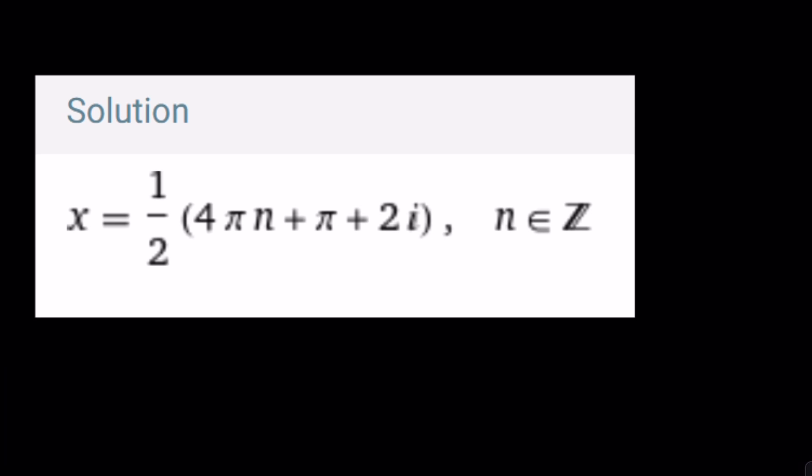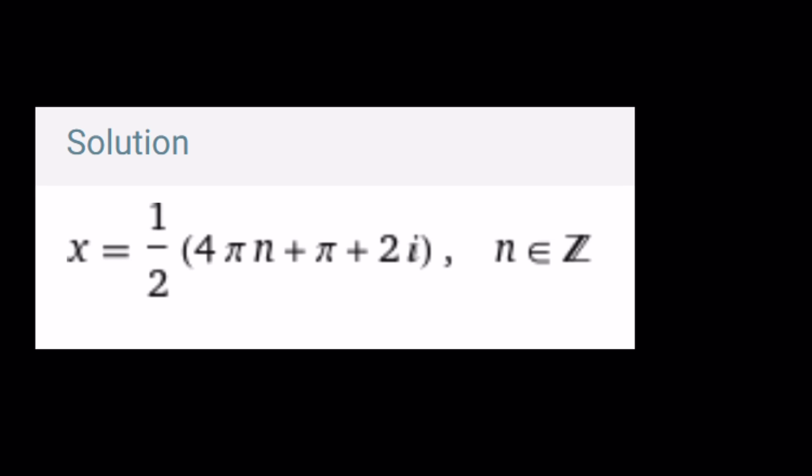Wolfram Alpha gives us the following. Oh, great. I was expecting to just see the principal value. But it does show all the values. It just wrote it a little differently. I don't know why. But if you distribute the one half, you're going to get the same thing.